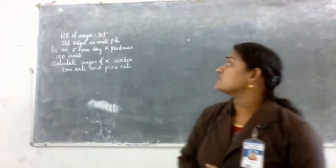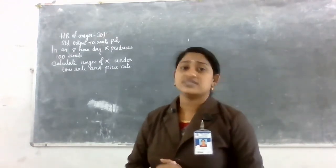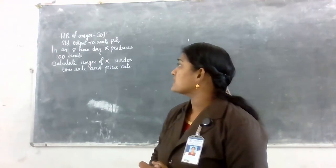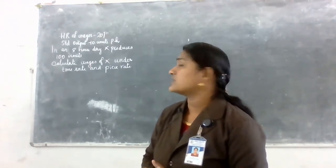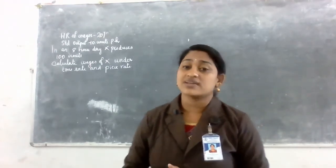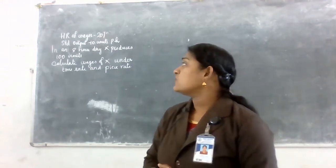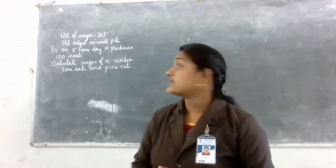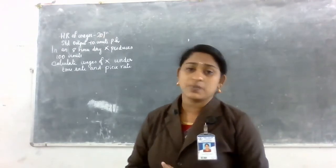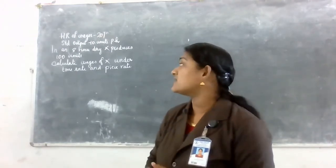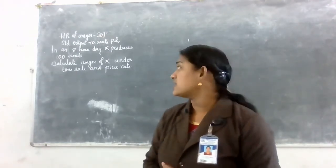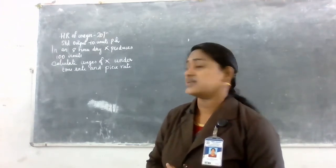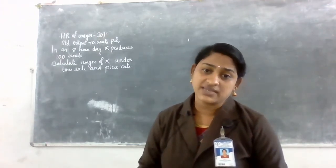The hourly rate of wages is 20, and the standard output is 10 units per hour. One day is 8 hours. X produces 100 units in a day. Calculate wages of X under time rate and piece rate system.